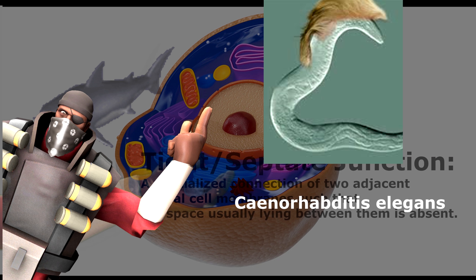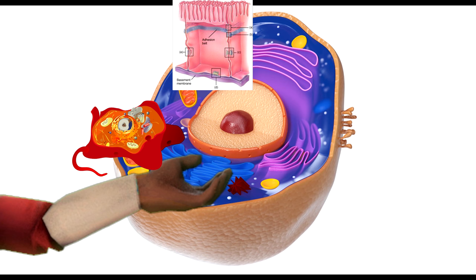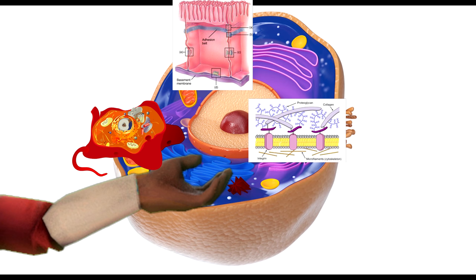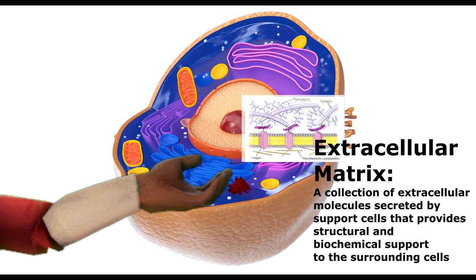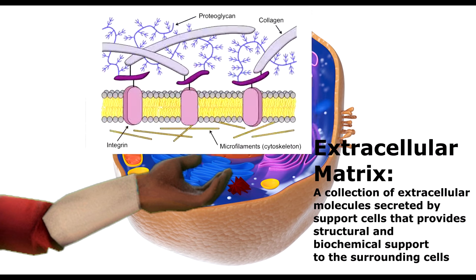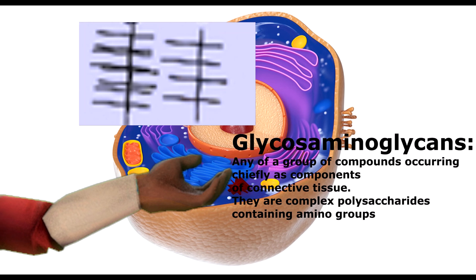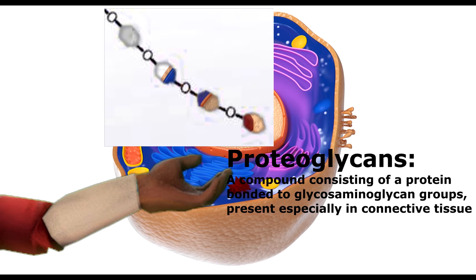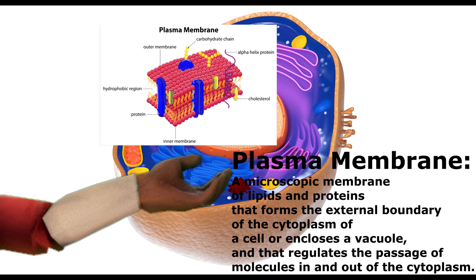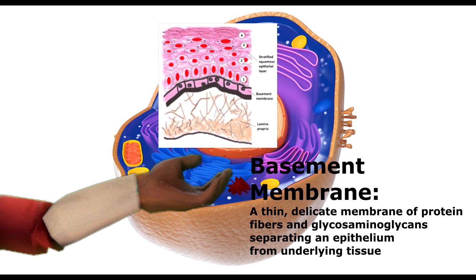Cell junctions are what go in between the cell itself and the extracellular matrix. And in animals, the extracellular matrix must contain extracellular macromolecules, glycosaminoglycans, proteoglycans, and the plasma membrane.